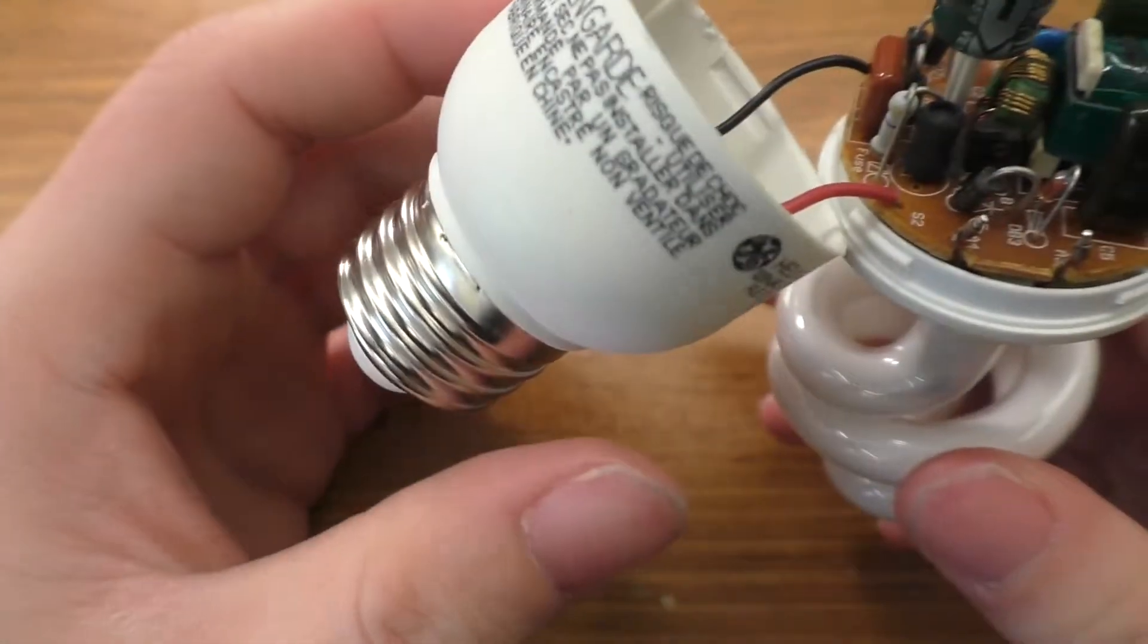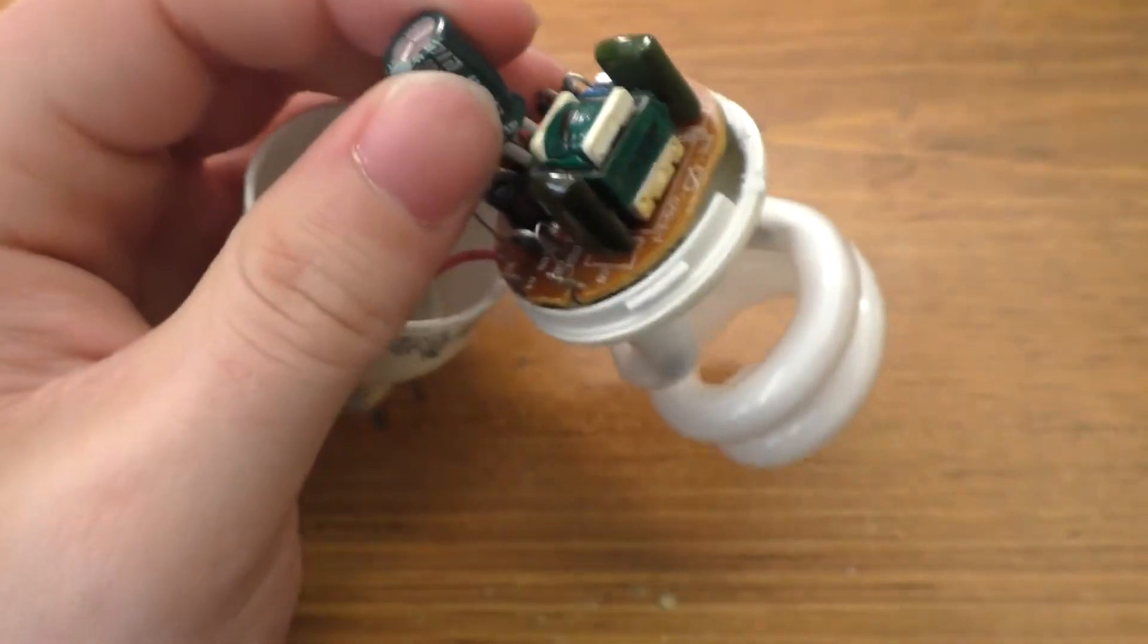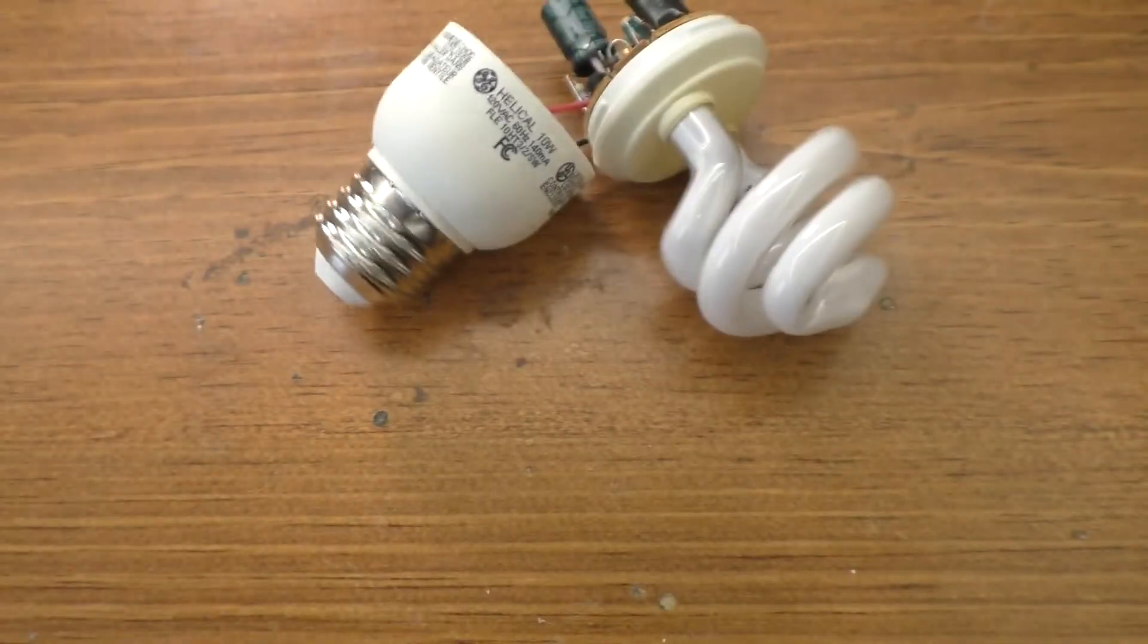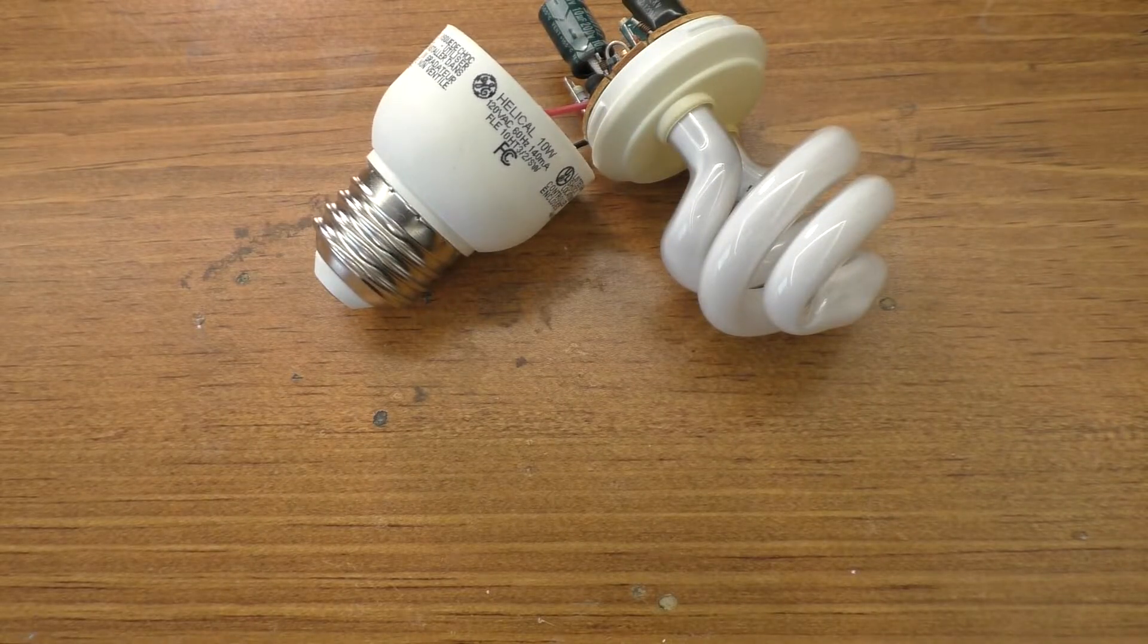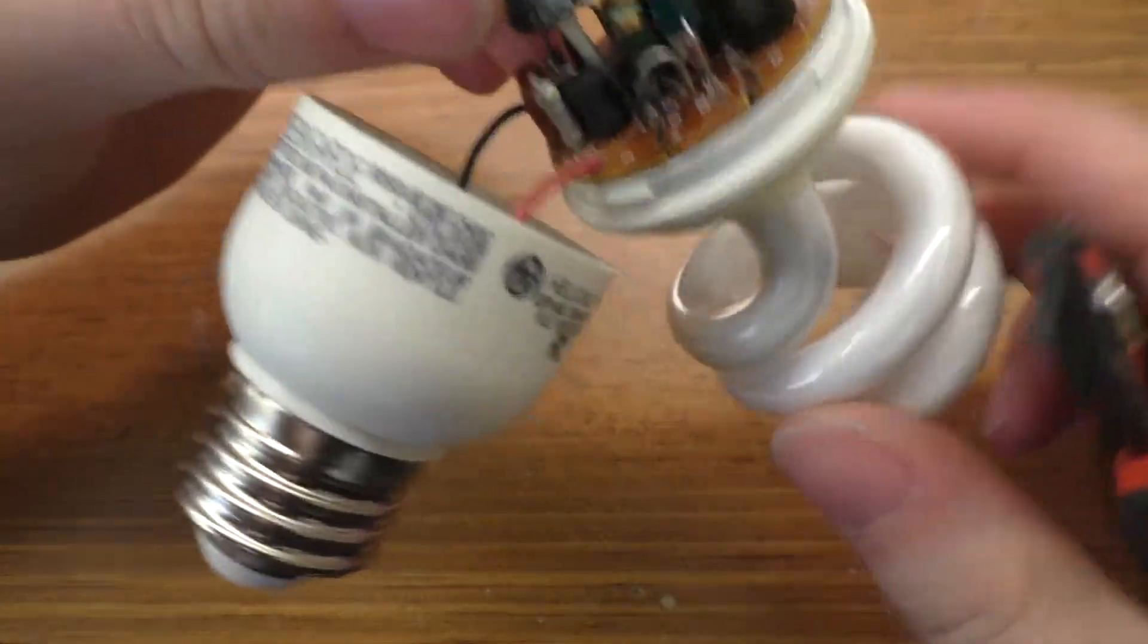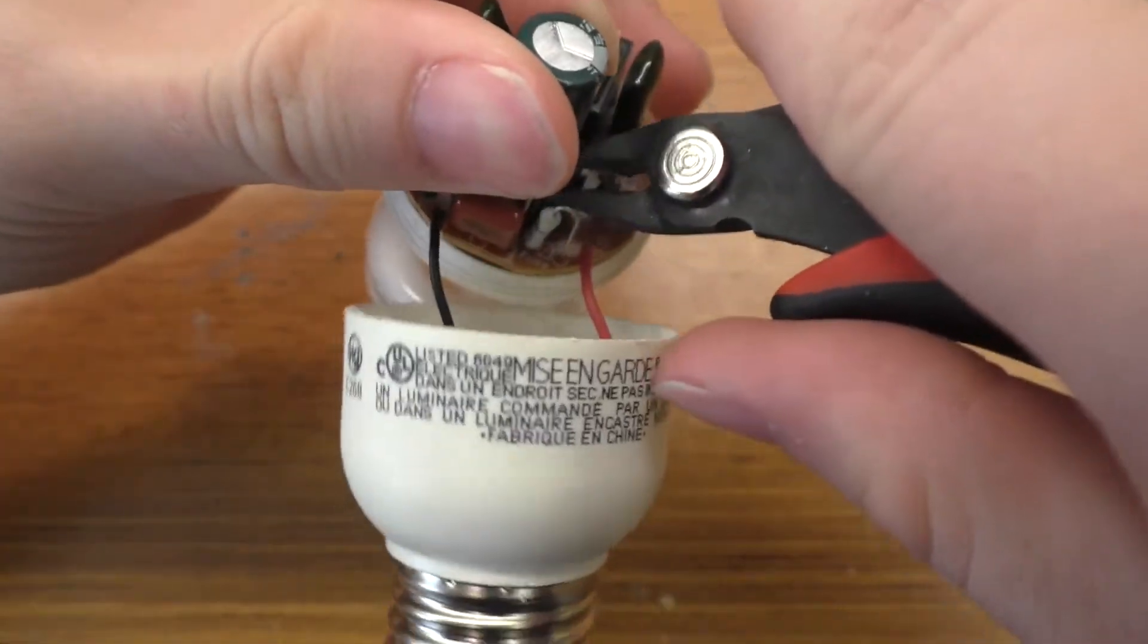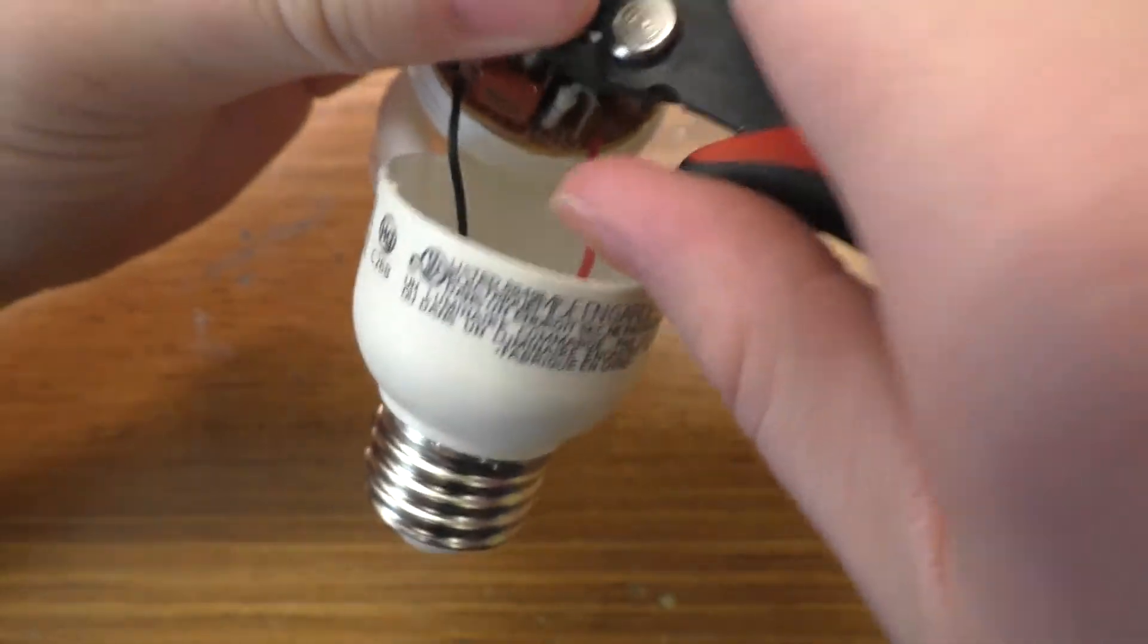So I'm kind of curious to see if that capacitor there is actually any good now. Because I mean it doesn't look bloated or anything. I'm just curious as to what it would measure if we took this guy out of the circuit and just put it across the meter.